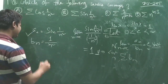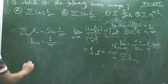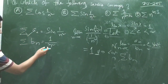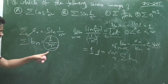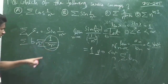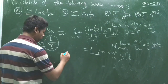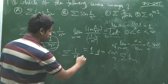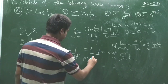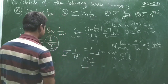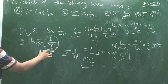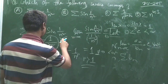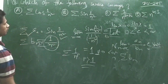So the series Σaₙ and Σbₙ behave the same. We know that the series Σ(1/n²) is convergent — by the p-series test, Σ(1/nᵖ) converges when p > 1, and here p = 2 > 1. Therefore, by the limit comparison test, sin(1/n²) is also convergent.